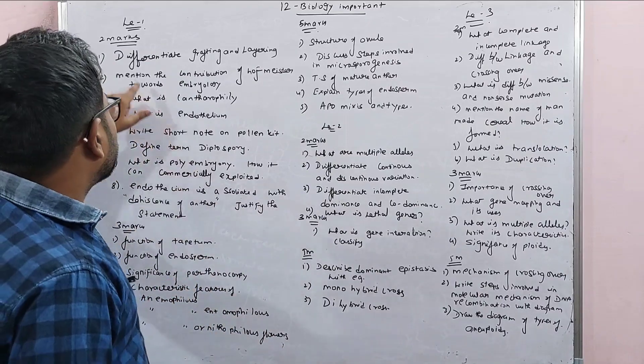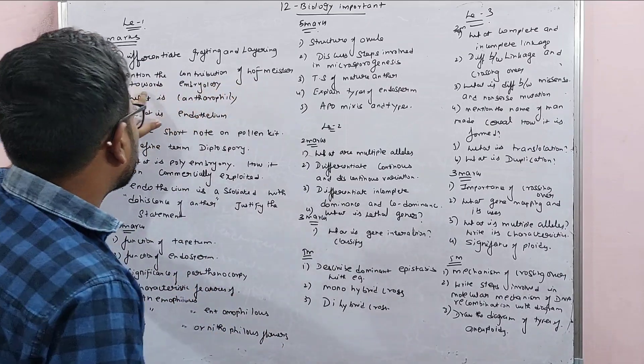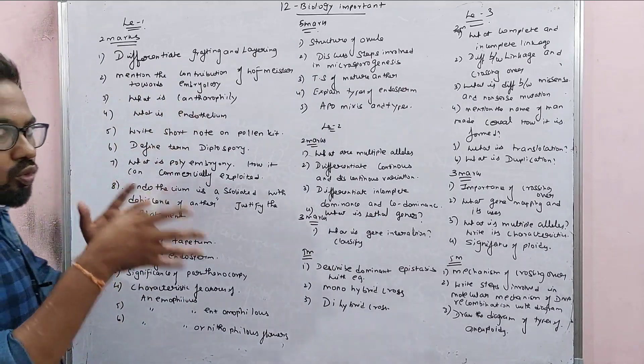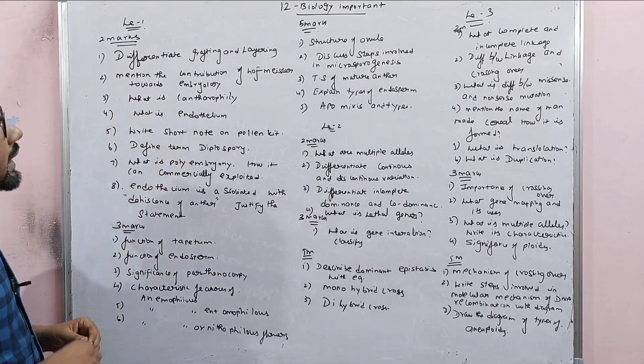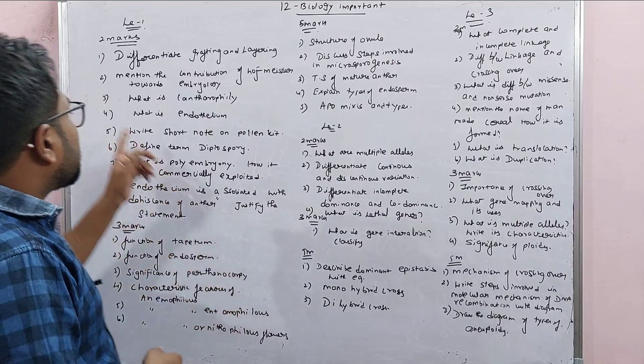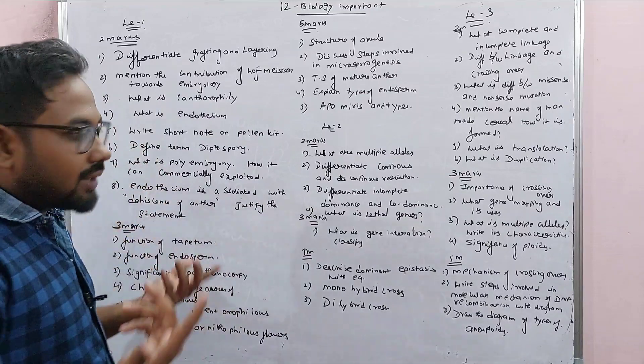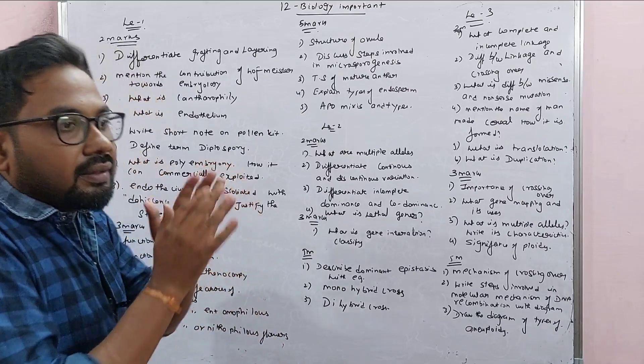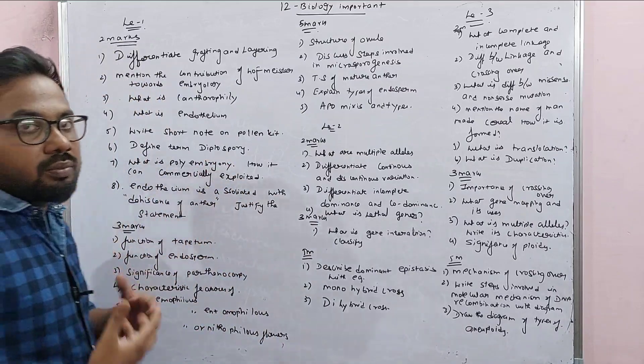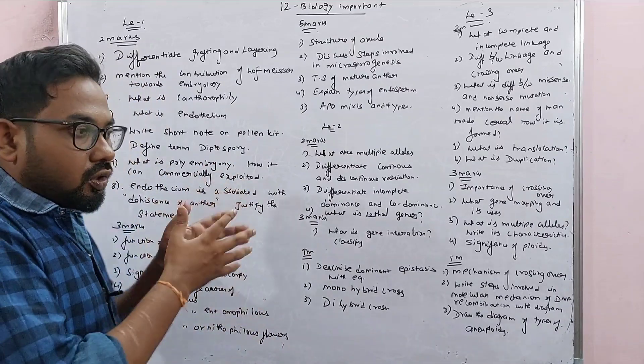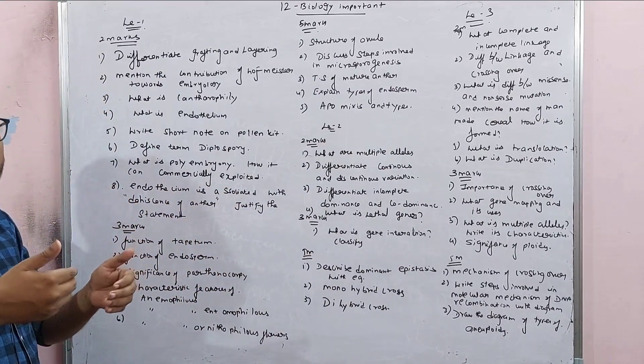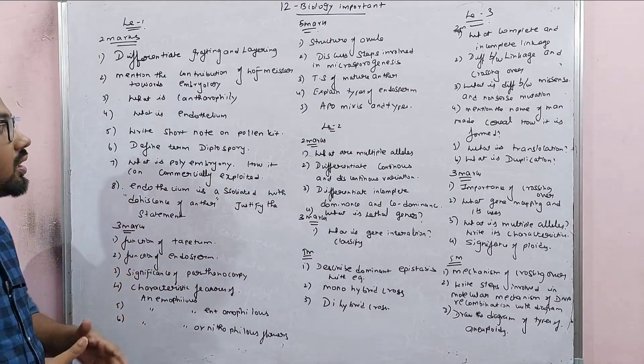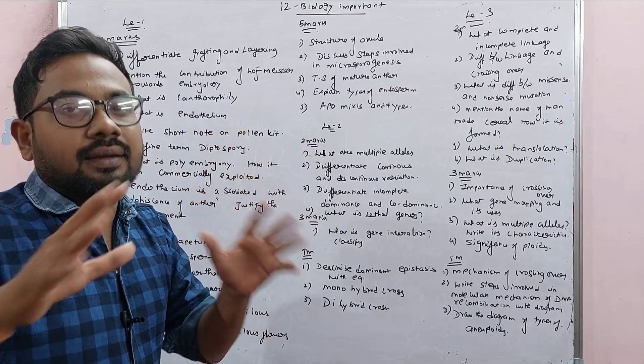Differentiate between Grafting and Layering, very basic about Grafting and Layering in Vegetative Reproduction. Mention the contribution of half-mister towards the Embryology. What is Cantharophily? This is a bookback question. What is Endothelium? Bookback. Short note on pollen kit, bookback. This is anther. Megasporangium, Microsporangium. The concept of Microsporangium, steps will learn in Microsporangium. In the concept line, T is the structure of anther.